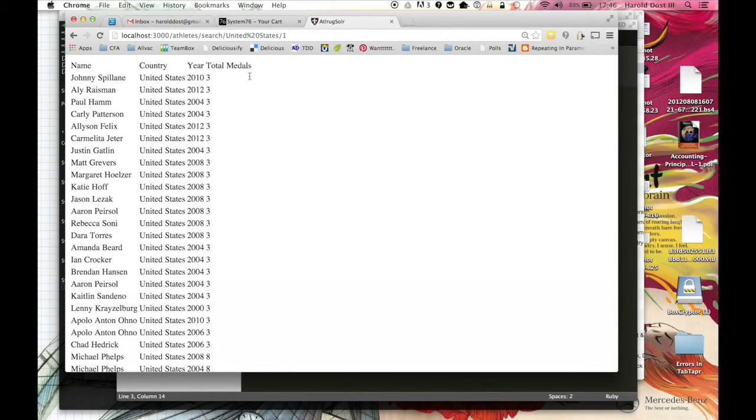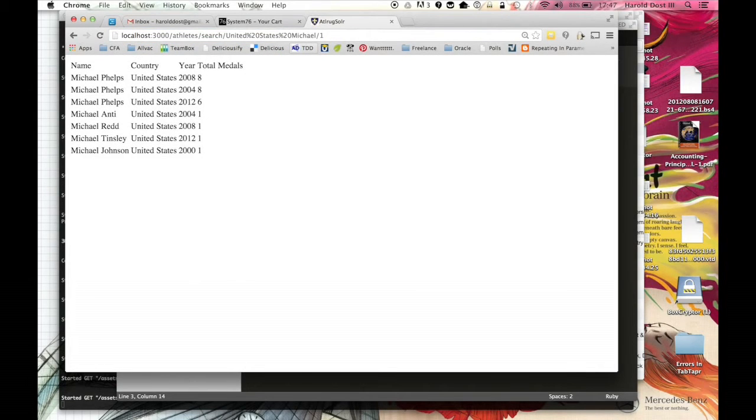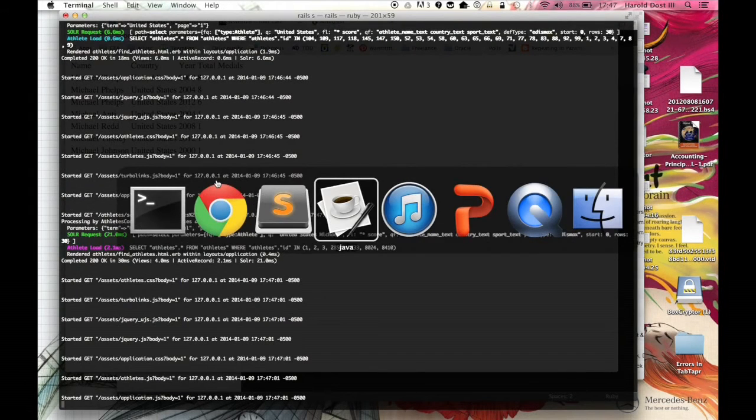Just as an example, just a real quick one. Under the search, I have athlete search, and then Germany right now. But let's say we want the United States. But we also want to know more specifically, who are we looking for in the United States? And being that it is more of a typical search engine, you can just type in certain portions. I want Michael Phelps, but I don't feel like typing out the entire thing. You can see we have Michael Phelps, Michael Antti, Michael Redd, Tinsley, and Johnson. And we also have different years.